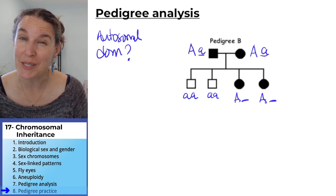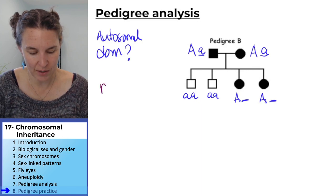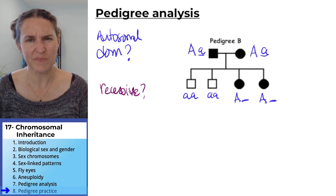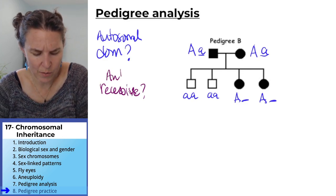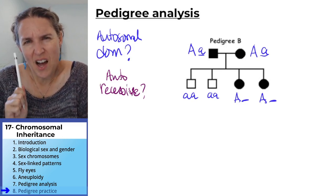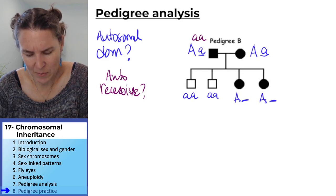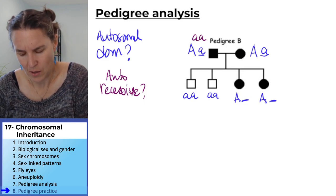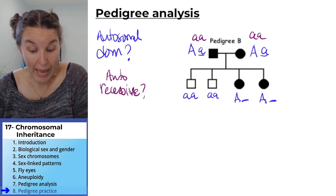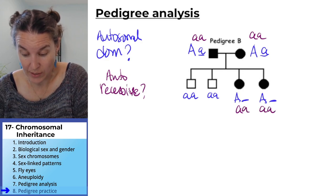Could it be recessive? Let's just see. Could it be autosomal recessive? If it's autosomal recessive, then it's going to have to be homozygous recessive. Both parents have to be homozygous recessive, and these kids have to be homozygous recessive.